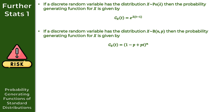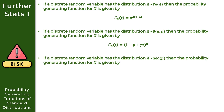Moving on to the third result: if we have a discrete random variable with X following a geometric distribution with parameter P, then the PGF for X in terms of T is equal to PT all over one minus one minus P times T.